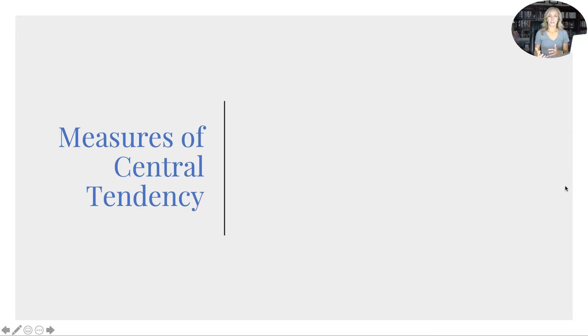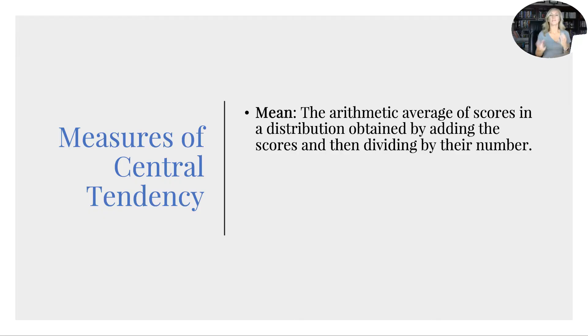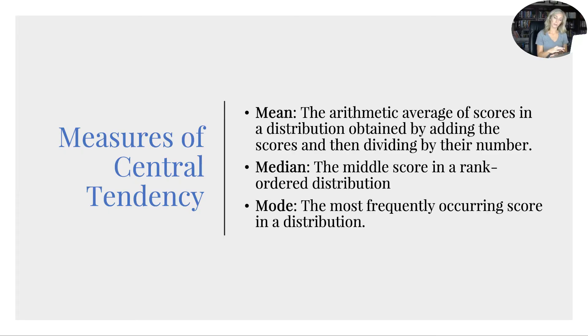Alright, so descriptive statistics would first be measures of central tendency. And these are probably just going to be refreshers for you. But it's mean, median, and mode. Mean being the arithmetic average of scores in a distribution obtained by adding the scores and dividing by the total number. The median being the middle score in a rank order distribution. And the mode being the most frequently occurring score in a distribution.